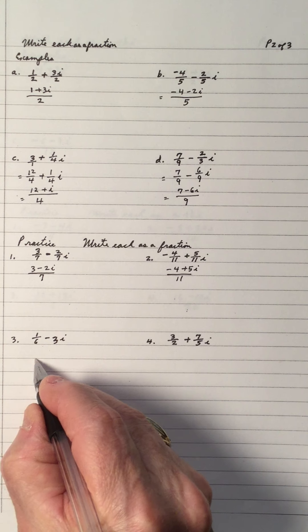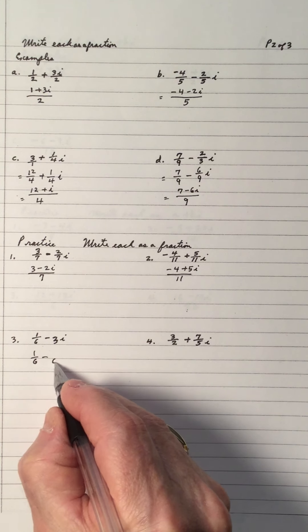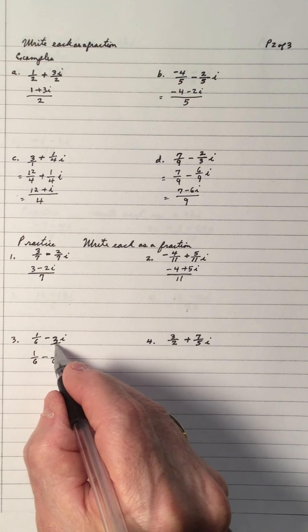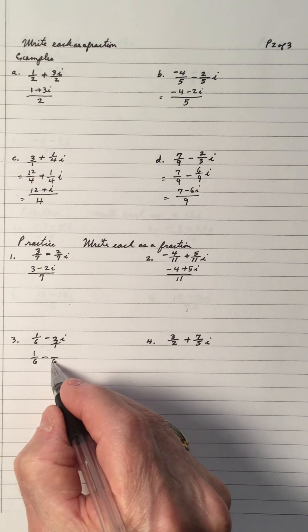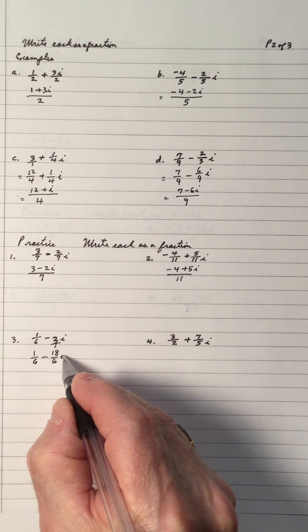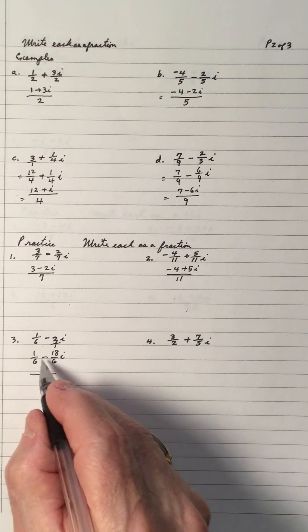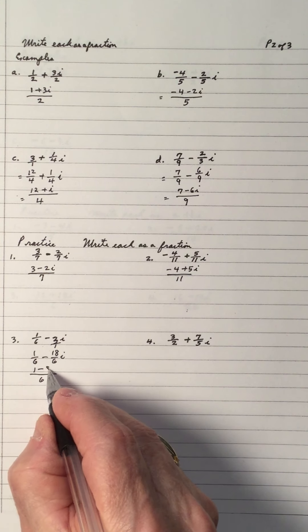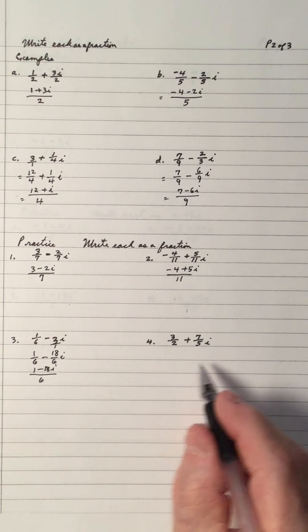The common denominator is 6. So, 6 stays the same. Common denominator is 6. So, we put the 3 over 1. 1 divided into 6 goes 6. 3 times 6 is 18i. And the common denominator is 6. So, we have 1 minus 18i over 6 as one fraction.